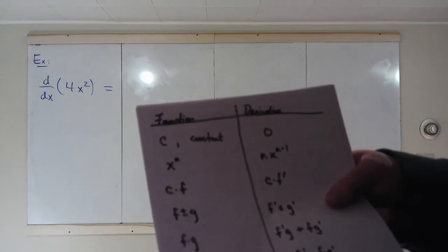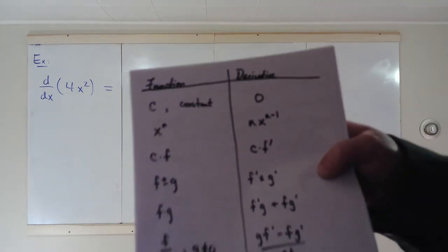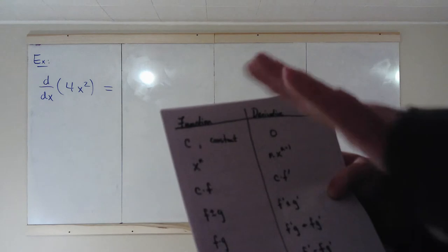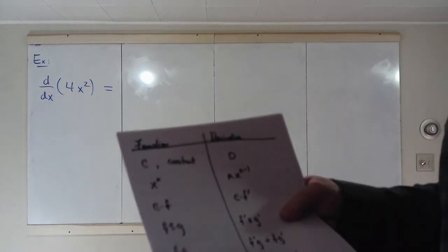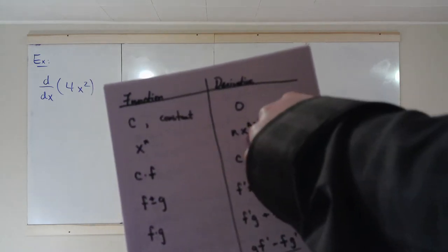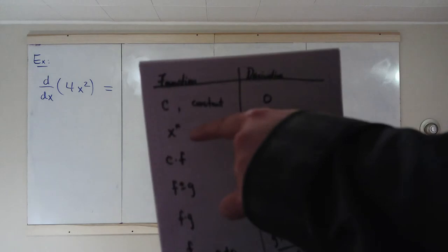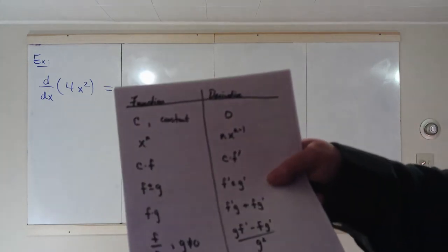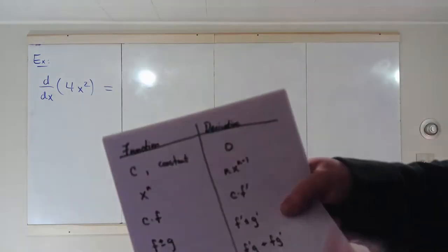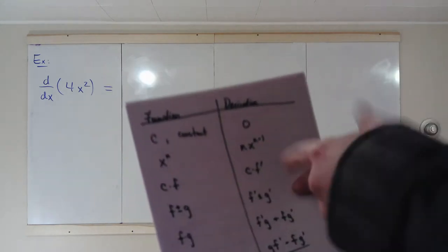The second rule, called the power rule: the derivative of x to the n, where x is our variable, is nx to the n minus 1. So if you want the derivative of x to the 5th, the derivative would be 5 times x to the 4. 5 minus 1 is 4.